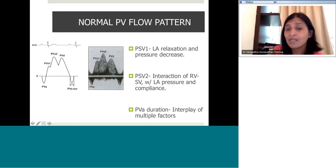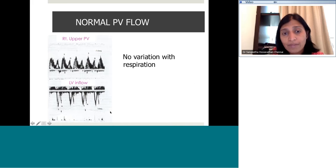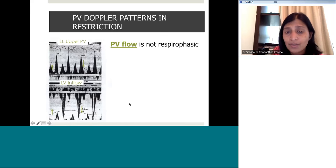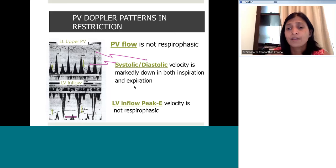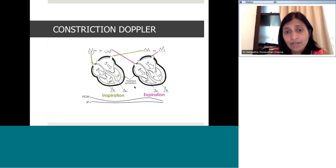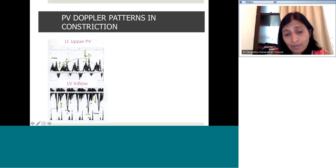Tissue Doppler is very useful. The key measurement is E prime, which reflects longitudinal movement of the myocardium. In constrictive pericarditis, there is no problem with compliance or longitudinal movement, so E prime is usually greater than or equal to 8 cm/s — sometimes even exaggerated. In restrictive cardiomyopathy, E prime is much lower than 8, reflecting reduced ventricular compliance. In the restrictive cardiomyopathy patient seen earlier, E prime is significantly less than 8, reflecting severe non-compliance of that ventricle.